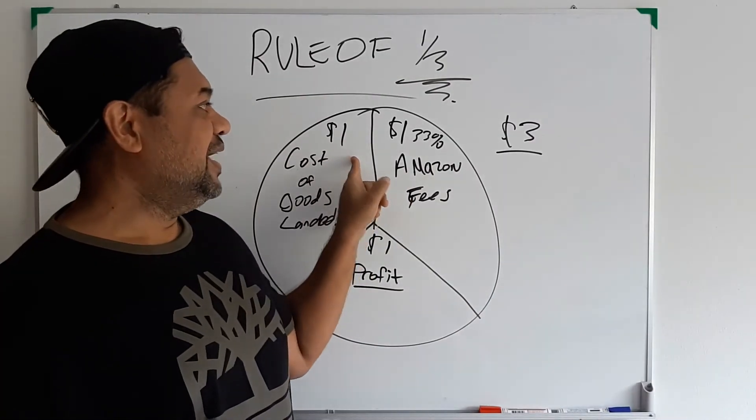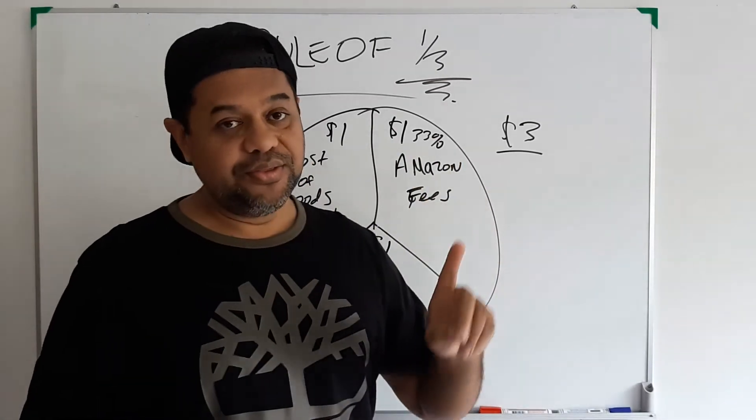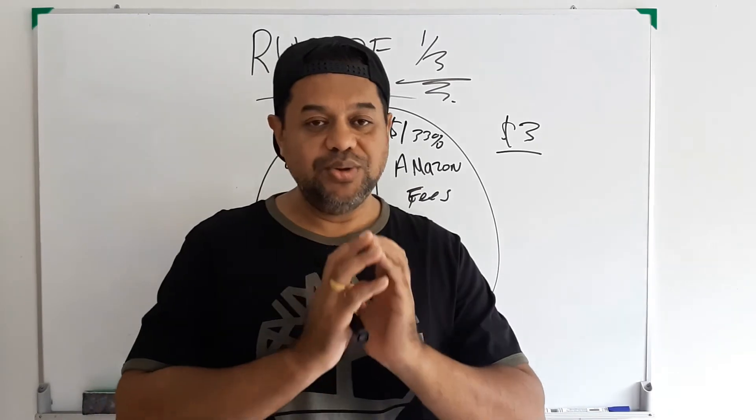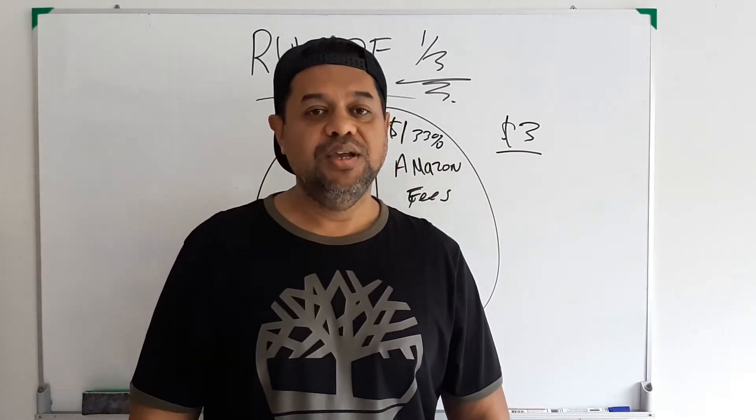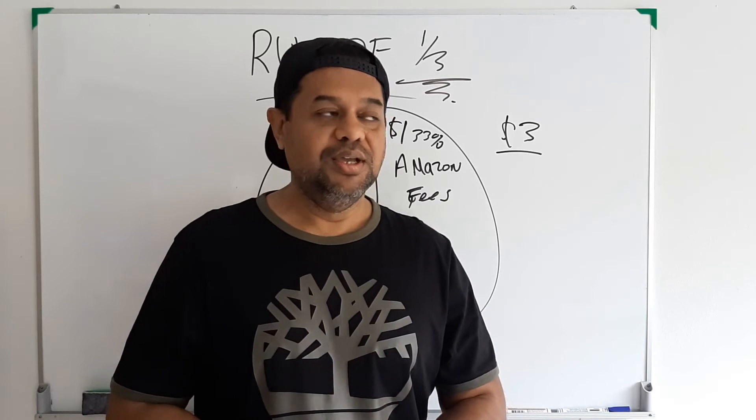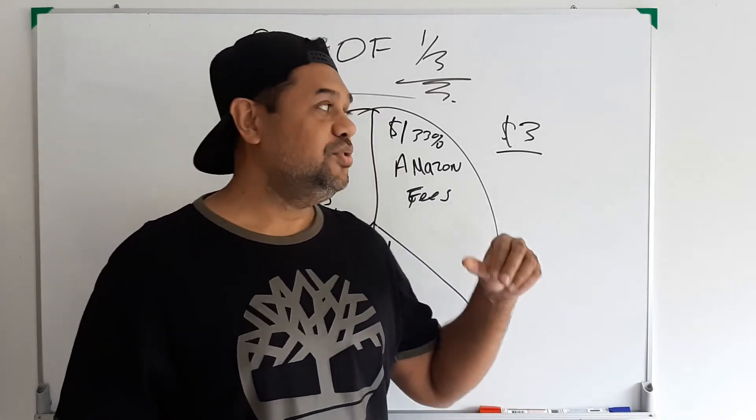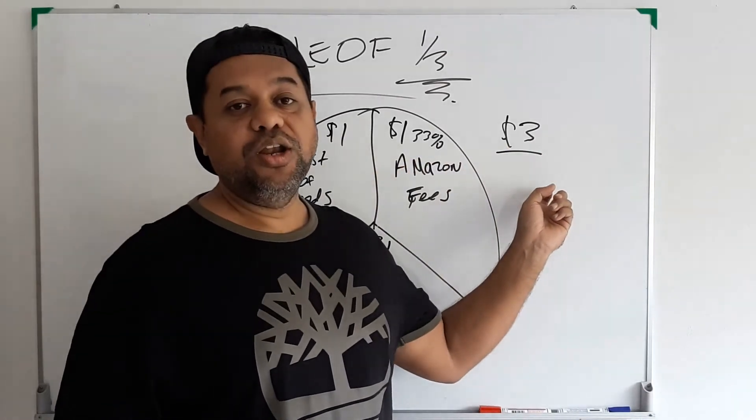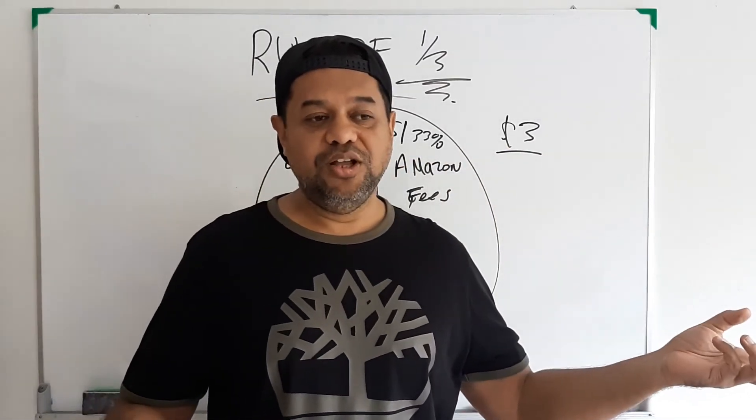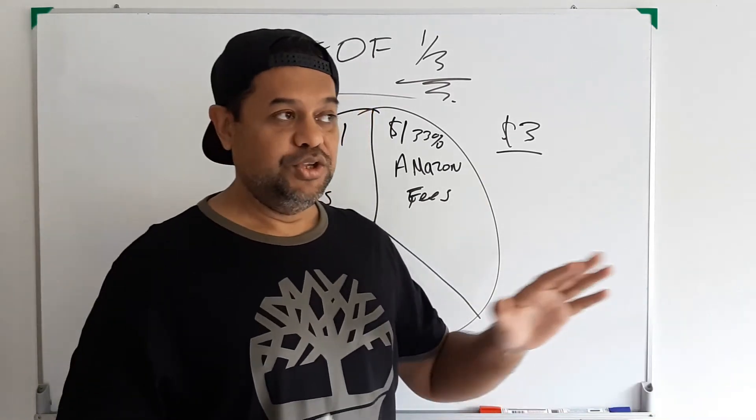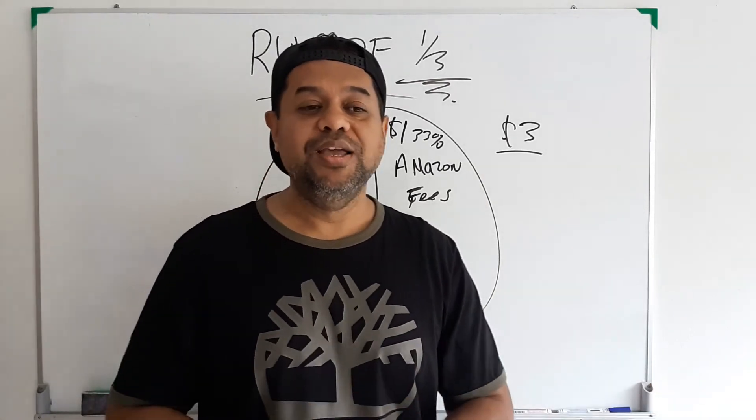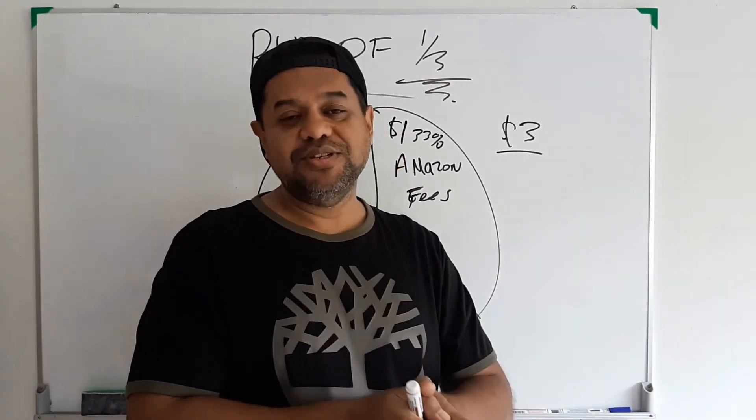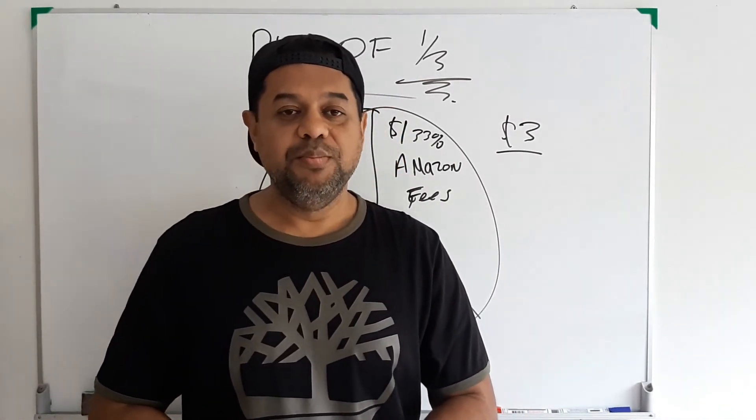You're going to figure out all your costs landed. That's going to be one third. The Amazon fee is going to be another third, and then your profit is one third. If you follow this and do everything that you figure out in your calculations, and you need to know your numbers, then you're going to be good. If you're buying something for five dollars and you need to sell it for thirty dollars, but you can't sell it for thirty dollars because they're all selling for fifteen dollars on Amazon, you're going to go broke. Don't even bother. If it doesn't fit this one third rule, just walk away and go to the next product.